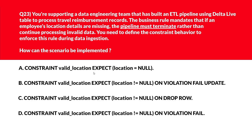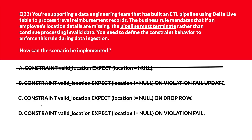All right, let's now look at this question. Option A is constraint valid_location expect location equal to null. A null expectation contradicts the requirement to enforce presence of location — therefore wrong answer. We'll move to B. B says constraint valid_location expect location not equal to null on violation fail update. Fail update stops the update operation but doesn't terminate the pipeline — wrong choice.